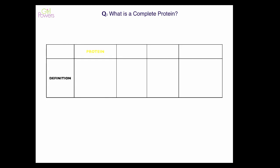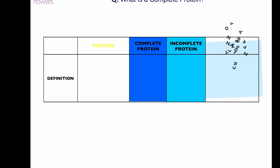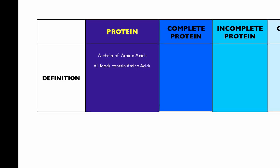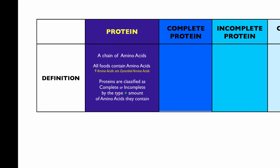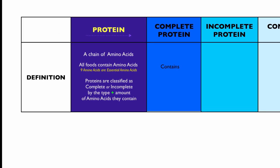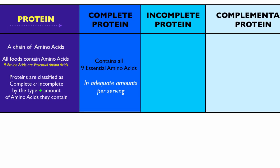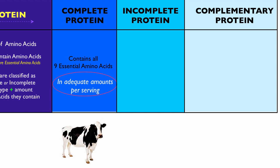So what is a complete protein? We'll look at complete protein, incomplete protein, and complementary protein. Protein is a chain of amino acids, and all foods contain amino acids. As a reminder, nine of them are essential. Proteins are classified as complete or incomplete by the type and amount of amino acids they contain. A complete protein contains all nine essential amino acids in adequate amounts per serving. Beef is considered a complete protein — it contains all nine essential amino acids in adequate amounts per serving.